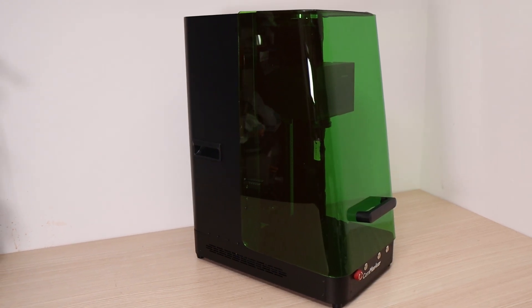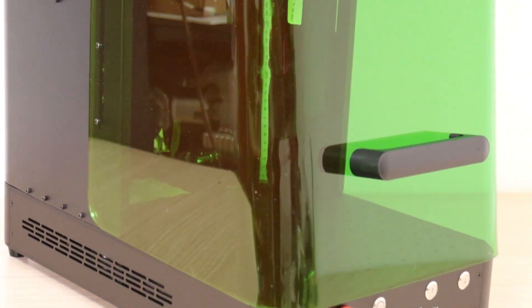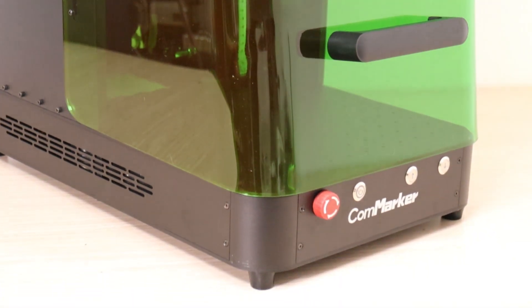Today we're checking out something really cool – a laser engraver that takes things to the next level. This is the CommMarker Omni-X, a 5-watt UV laser engraver that's fully enclosed for eye protection and smoke extraction.